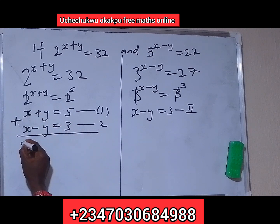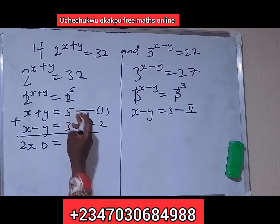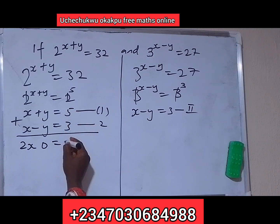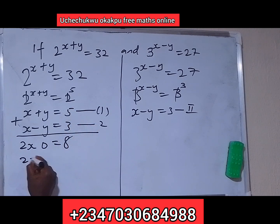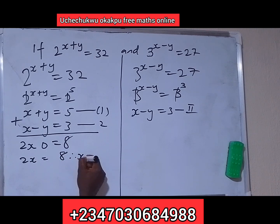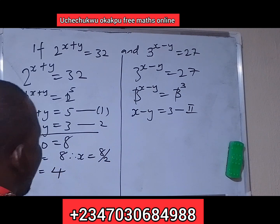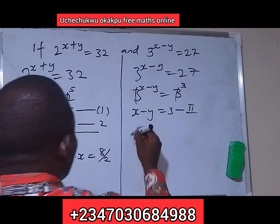Now we add the two equations to eliminate y. x plus y added to x minus y gives 2x on the left, and 5 plus 3 gives 8 on the right. So 2x is equal to 8, and x is equal to 8 over 2, which gives x is equal to 4.